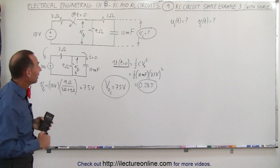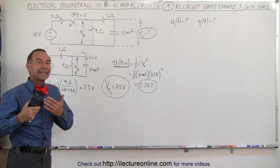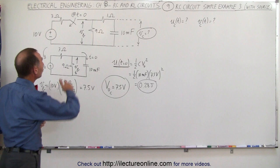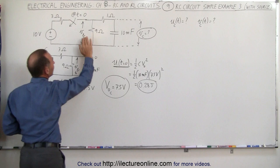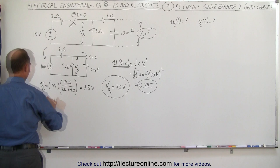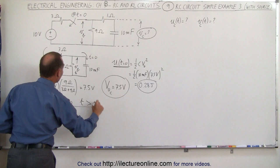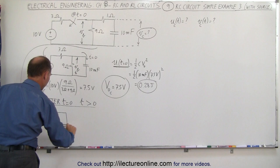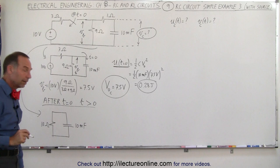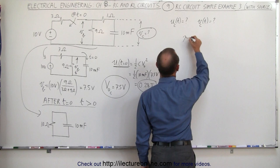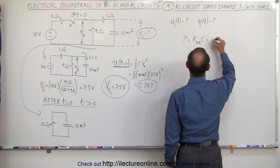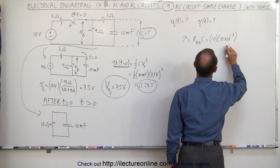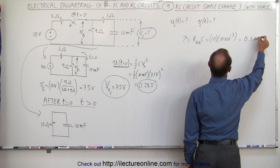The difference between this example and the previous two is that we have a source which sets up the initial conditions — we had to figure them out because we had the source in the circuit. But once we open the switch, we disconnect the source and the 3 ohm resistor, leaving a new equivalent circuit: a single 10 ohm resistor matched with a 10 millifarad capacitor. From this we find the time constant τ, which equals the equivalent resistance times the capacitance — 10 ohms times 10 times 10 to the minus 3 farads — giving us 0.1 seconds.